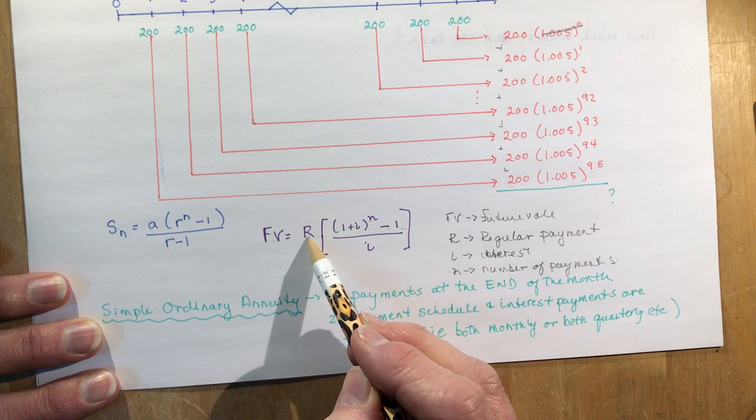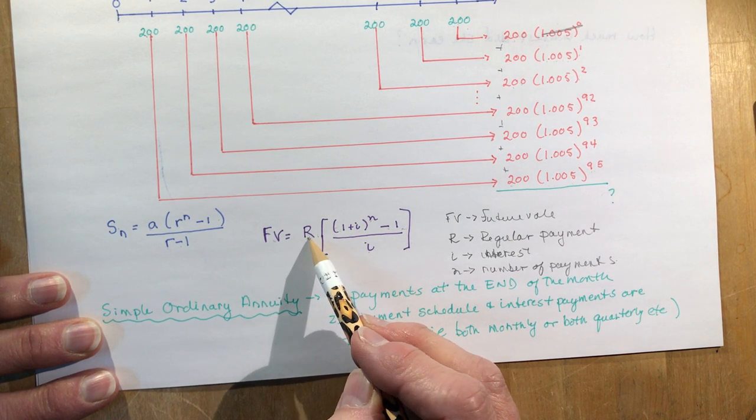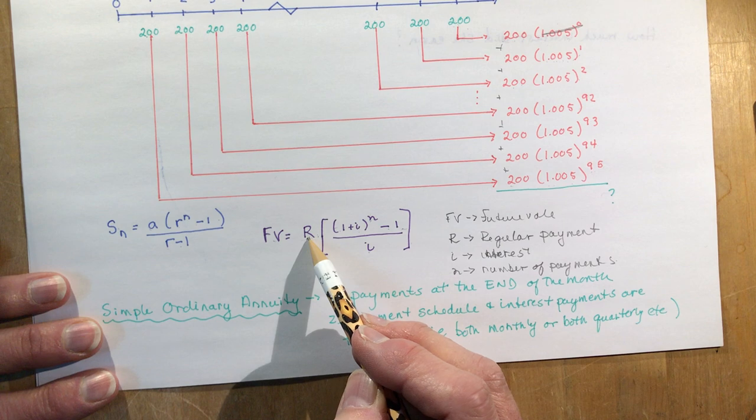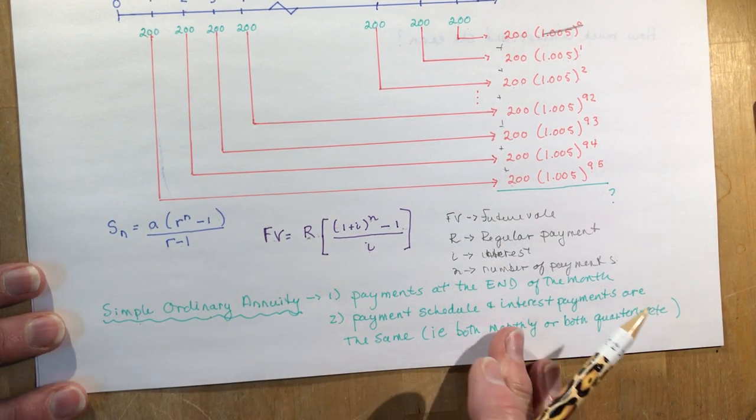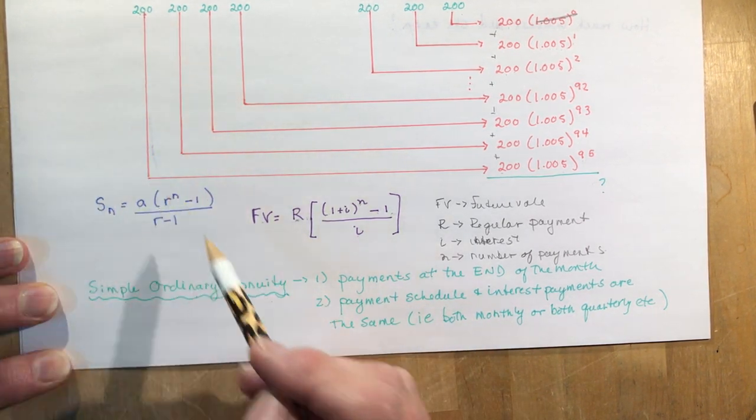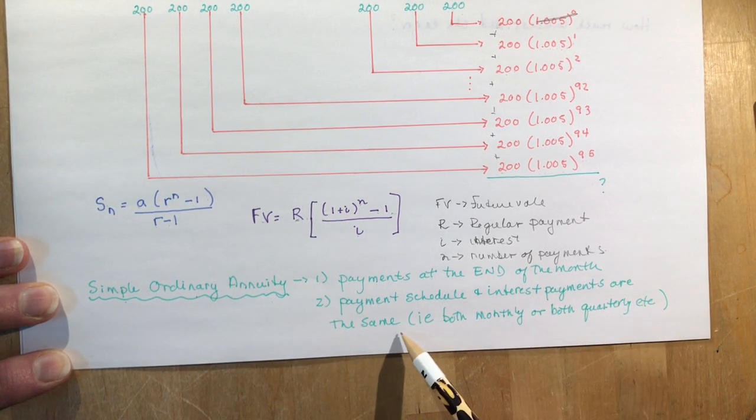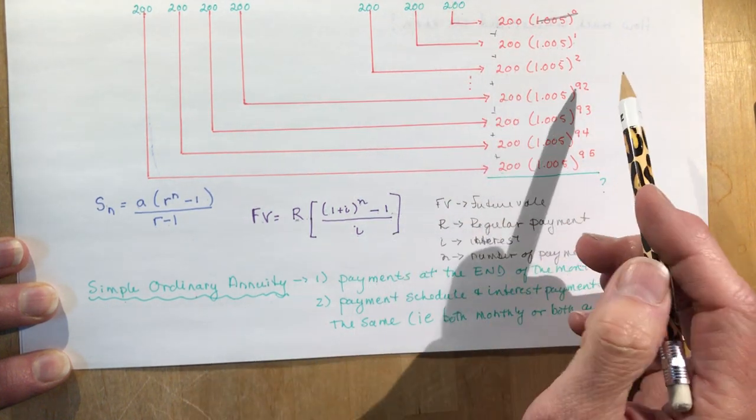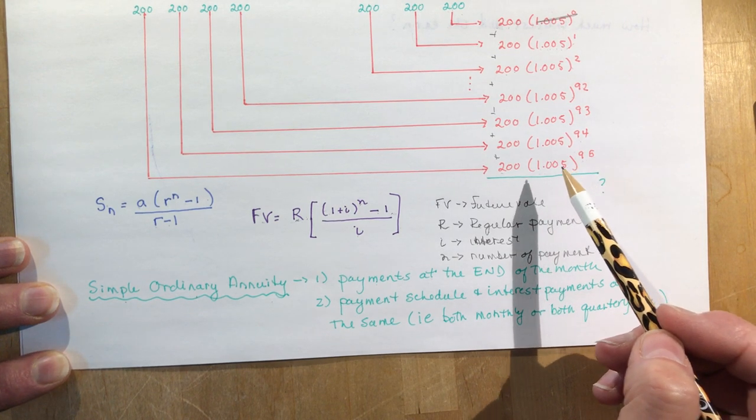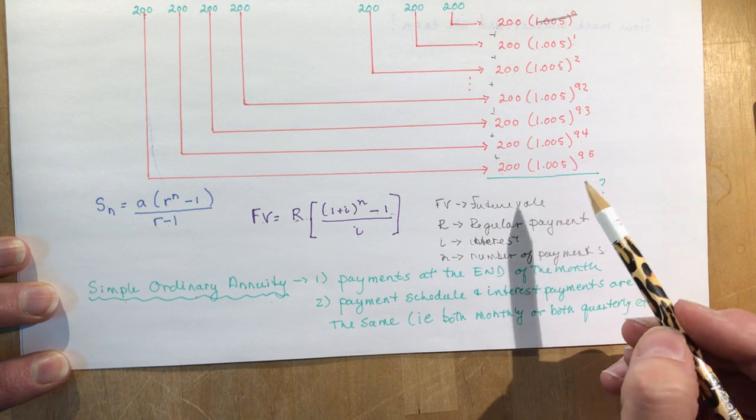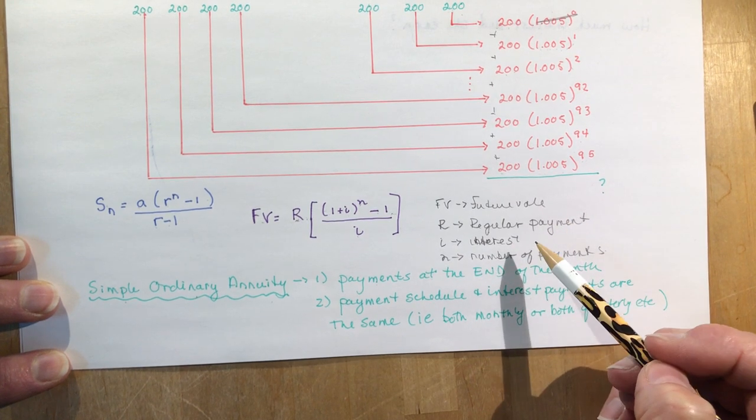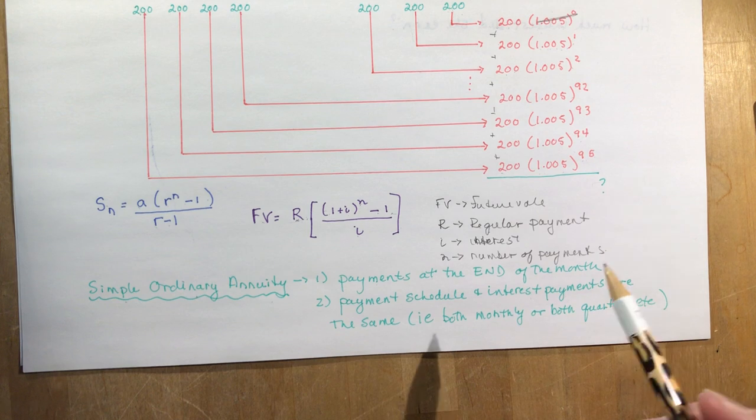That's the formula we're going to be using. When you see this R in the formula, your teacher may give you the formulas on a test. When you see R, that means regular payment, which should click in your mind that it's an annuity. These are actually called simple, ordinary annuities. The reason they're simple and ordinary is because the payments are made at the end of a month, and the payment schedule and interest payments are the same. In this case, the interest was compounded monthly, and the payments were made monthly. Those are the ones you're going to be doing in grade 11 math.